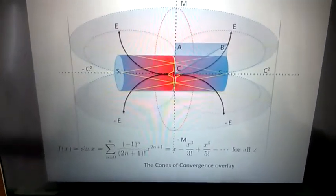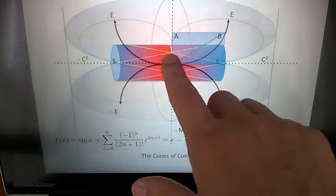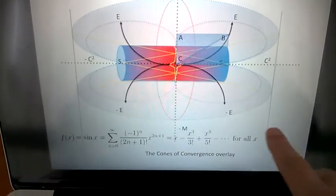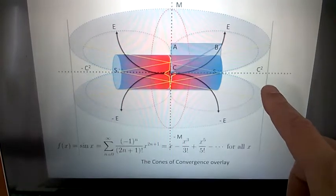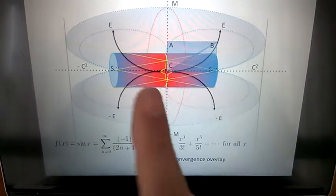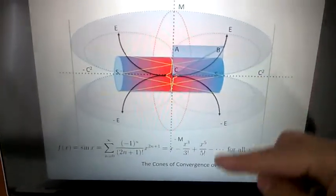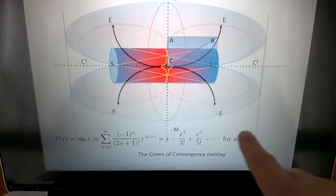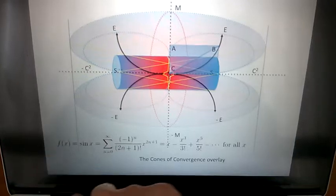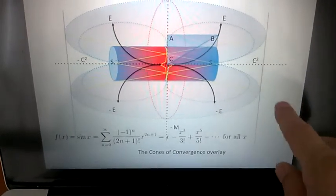If you wanted to look at the cones of convergence, the yellow lines here, we can always apply this. Now this applies to one angle. Now I've got another 359 in that plane, and 360 in that. So it's that times 359 to the power of 360.